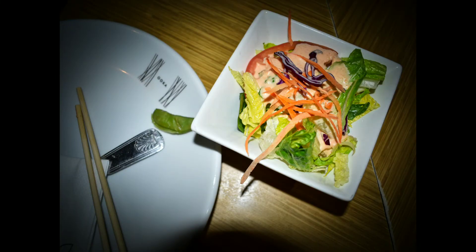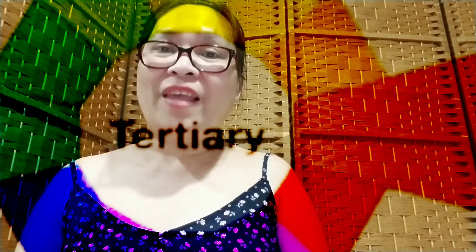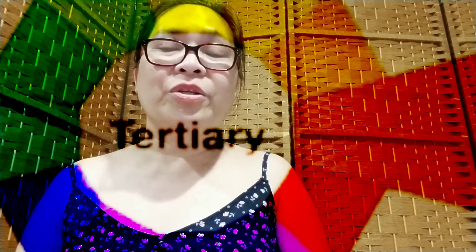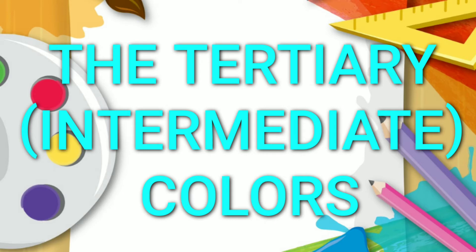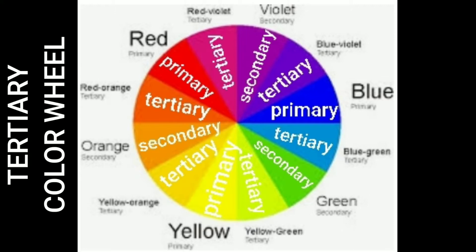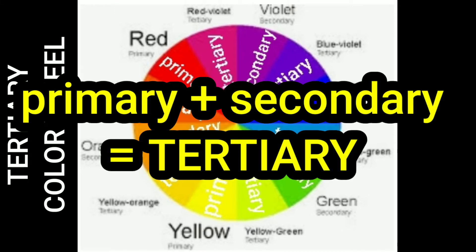Those are the secondary colors. Mixing primary and secondary colors creates tertiary colors, also called intermediate colors. The tertiary colors — how are they made? Let us study the tertiary color wheel. On the color wheel, the tertiary colors are located between the secondary and the primary colors, because tertiary colors are made of primary and secondary colors. So tertiary is the baby of primary and secondary.